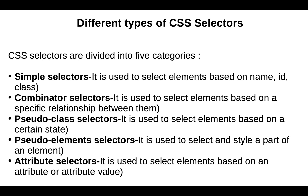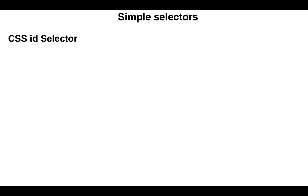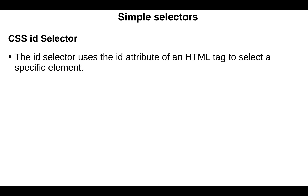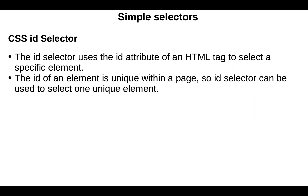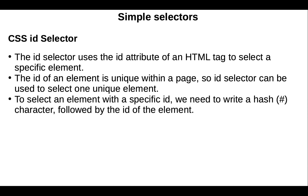In this video we will focus on simple selectors. First is the CSS ID selector. The ID selector uses the ID attribute of an HTML tag to select a specific element. The ID of an element is unique within a page, so the ID selector can be used to select one unique element. To select an element with a specific ID, we write a hash character followed by the ID name.